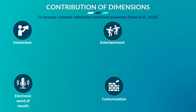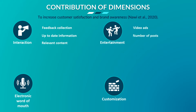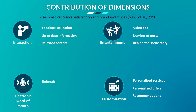So I am going to prepare a set of statements to represent these dimensions. After doing a thorough literature review, I classified the following statements for each dimension. First, interaction can be measured by regular customer feedback collection, disseminating up-to-date information, and availability of customer-relevant content. Second, entertainment is based on attractive video-based ads, number of posts, and behind-the-scenes story. Third, customization can be computed by personalized services, personalized offers, and recommendations. And lastly, electronic word-of-mouth can be determined by number of referrals, customer ratings, and shared reviews, and promotion of user-generated content like blogs, tweets, Facebook, and Instagram posts.